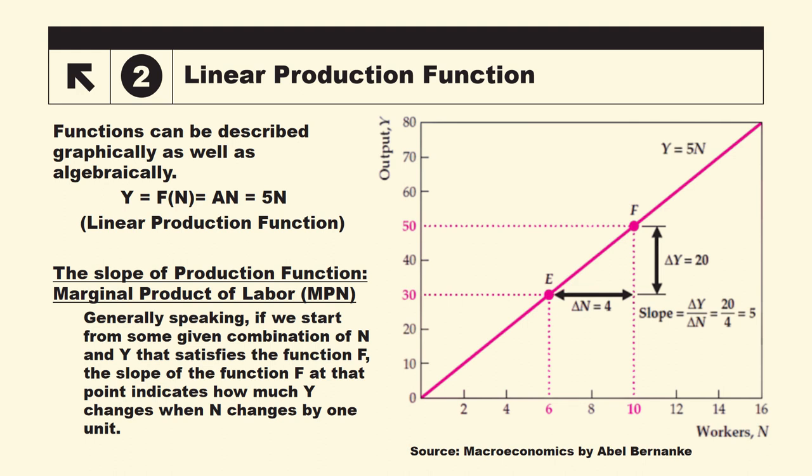So yaha se agar aap number of workers mein ek unit ka idaafha karenge, toh slope actually aapka bataye gae ki how much output will increase and will change. In this case it will increase. Generally we can say how much output will change. So for example, starting from point e. At e you can see, we have 6 units of worker and 30 units of output. And if you go to point f, at f we have 10 units of worker and we have 50 units of output.